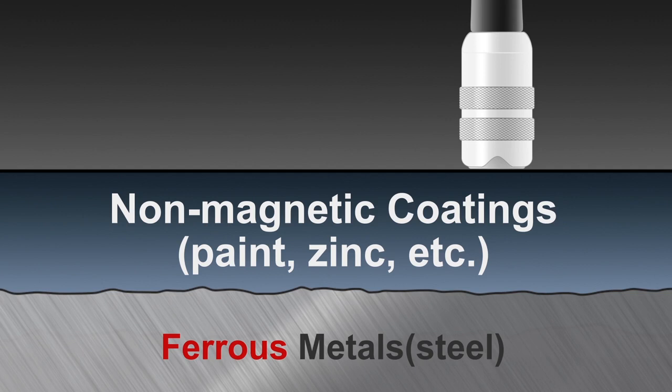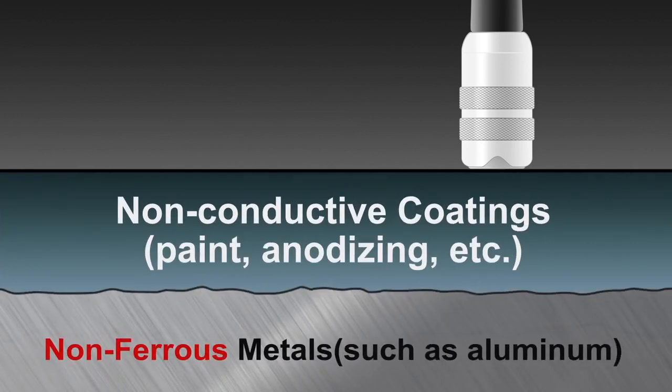It can be operated like a conventional combination ferrous, non-ferrous gauge to measure the thickness of coatings on either steel substrates or on non-steel metal substrates such as aluminum.